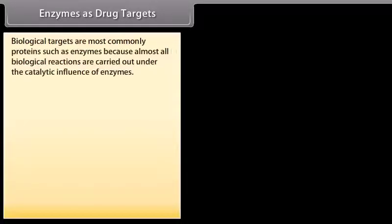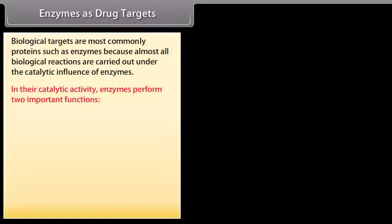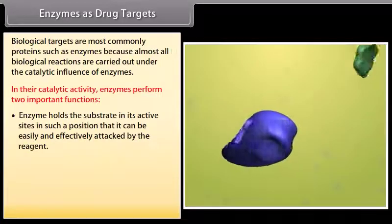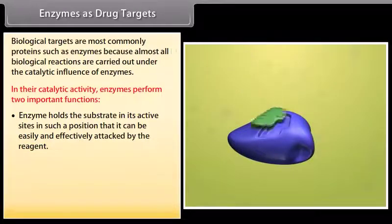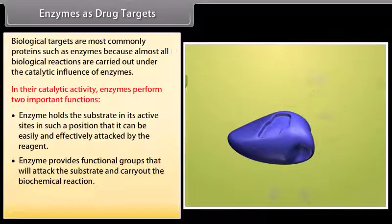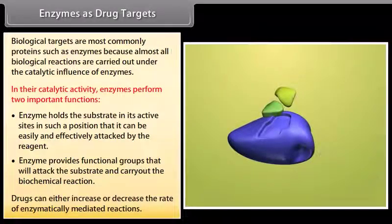Enzymes as drug targets: biological targets are most commonly proteins such as enzymes, because almost all biological reactions are carried out under the catalytic influence of enzymes. In their catalytic activity, enzymes perform two important functions: they hold the substrate at their active sites in such a position that it can be easily and effectively attacked by the reagent; and they provide functional groups that will attack the substrate and carry out the biochemical reaction. Drugs can either increase or decrease the rate of enzymatically mediated reactions.